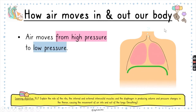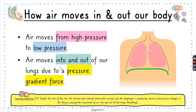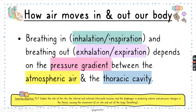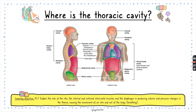Air moves from high pressure to low pressure. Air moves into and out of our lungs because of this pressure gradient. During breathing in — which can be called inhalation or inspiration — and breathing out — called exhalation or expiration — everything depends on the pressure gradient between atmospheric air outside the body and the thoracic cavity inside the body.